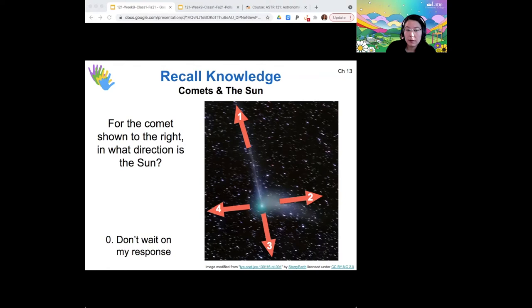So the ion tail points directly away from the sun, meaning that the sun must be in the direction of arrow number three here.